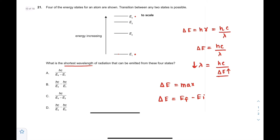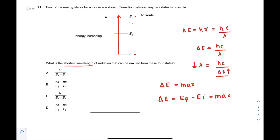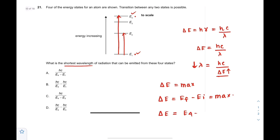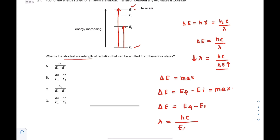We want the final energy minus the initial energy to be maximum. This occurs when the particle jumps from E1 to E4, giving the largest energy difference — much larger than E1 to E2 or E1 to E3. So ΔE = E4 − E1, and therefore λ = hc/(E4 − E1). The answer is option E.